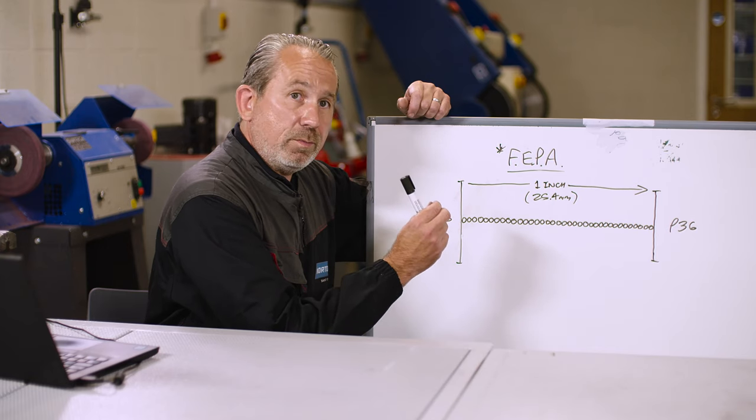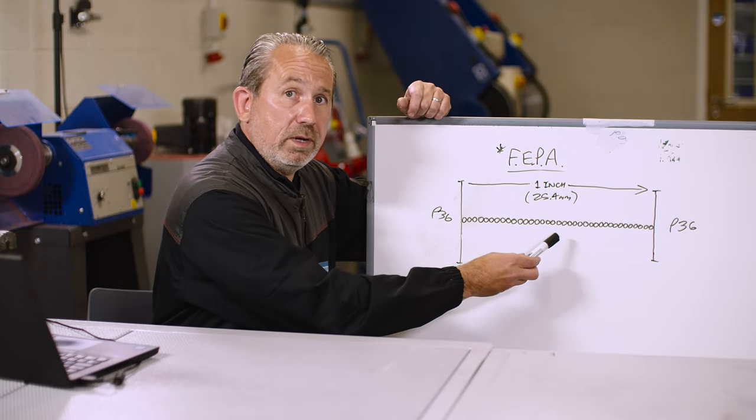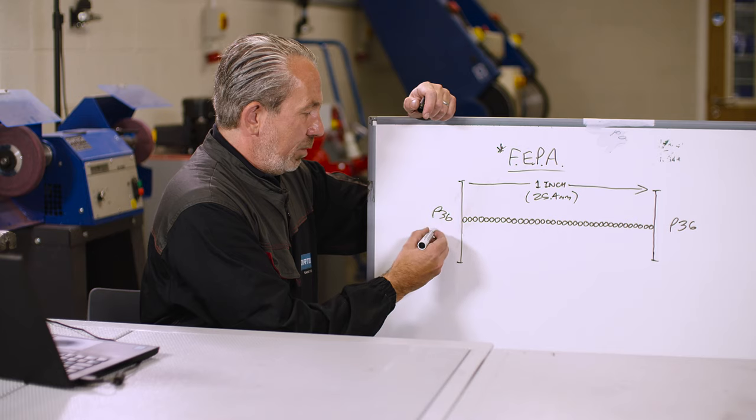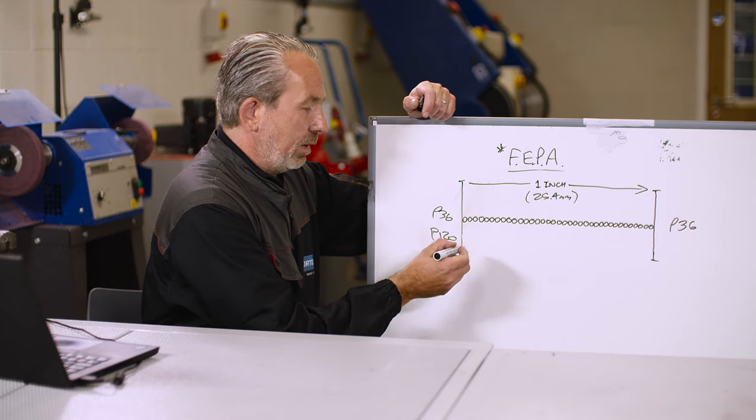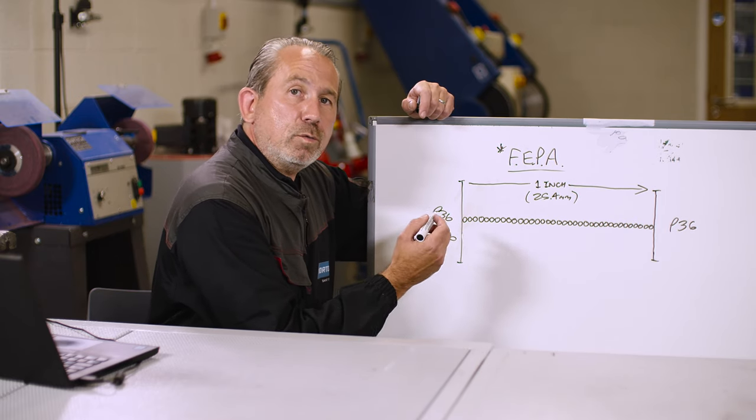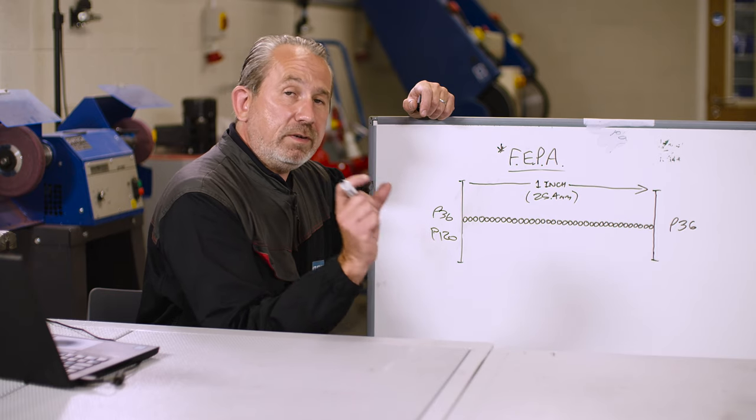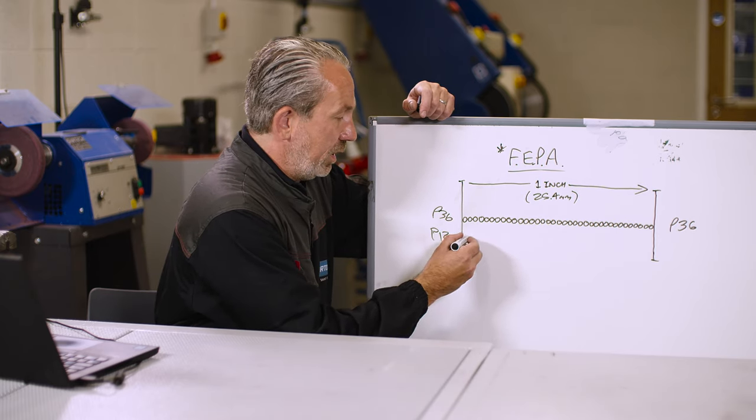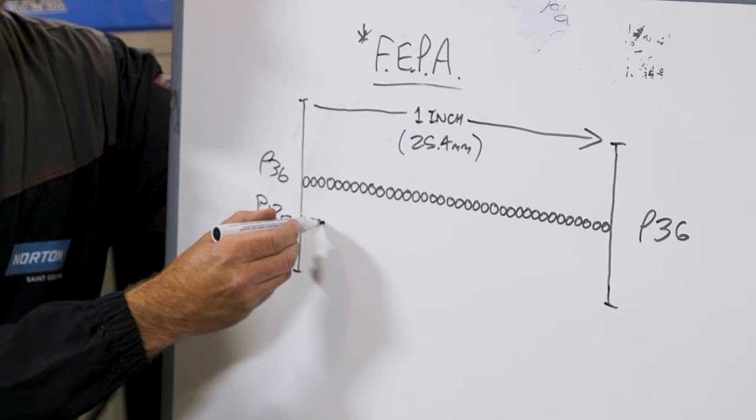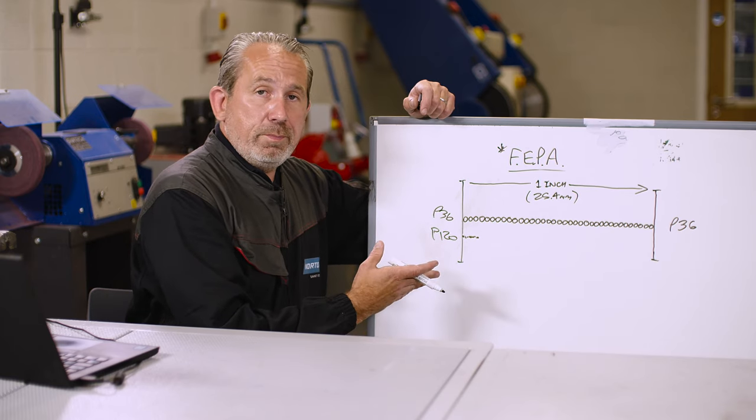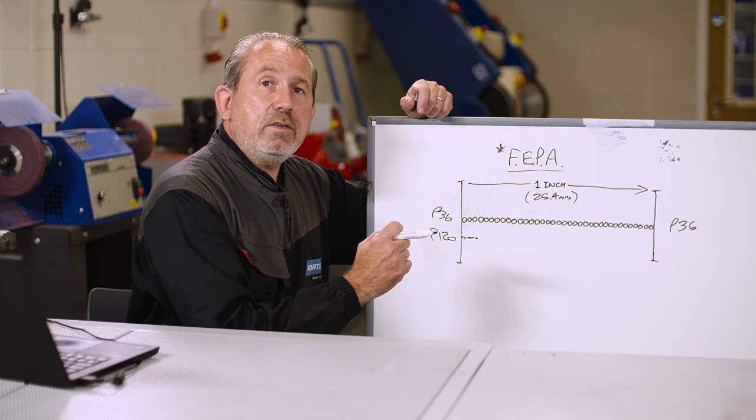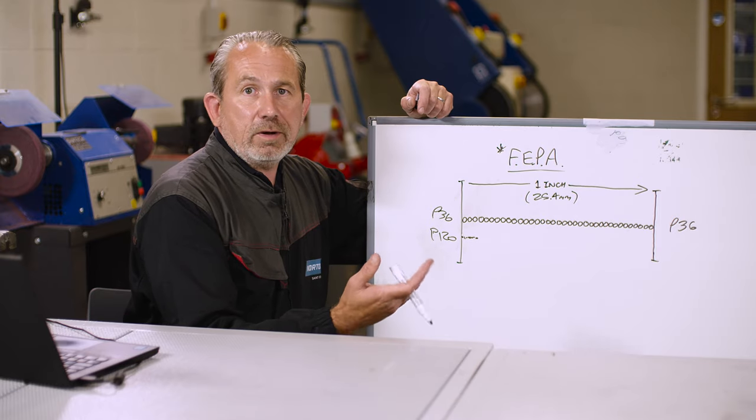To clarify that a little bit more: if we had a P120, for example, we would have to get 120 particles of grain to fit in that same linear inch, so they would obviously have to be a lot smaller than a P36. So the lower the number, the bigger the grain is going to be. The higher the number, the grain is going to have to be smaller—so finer grain.